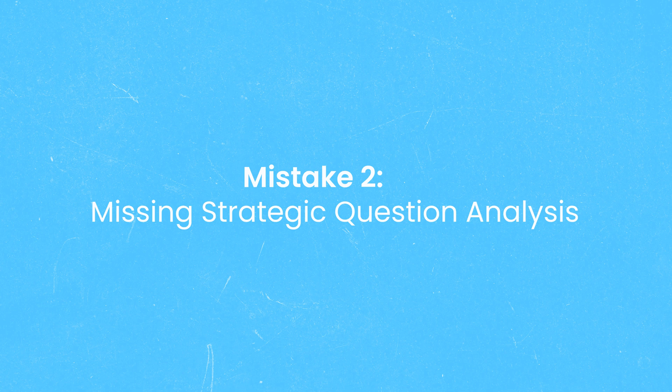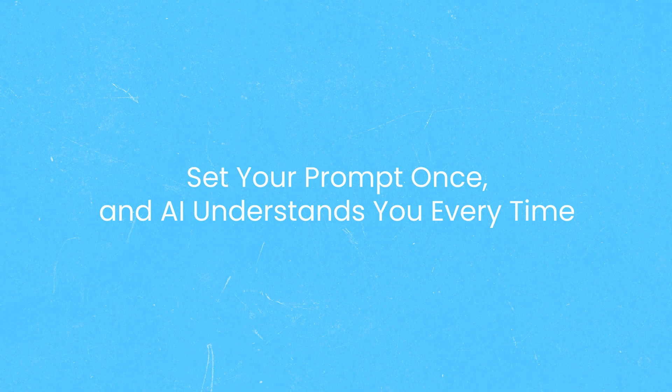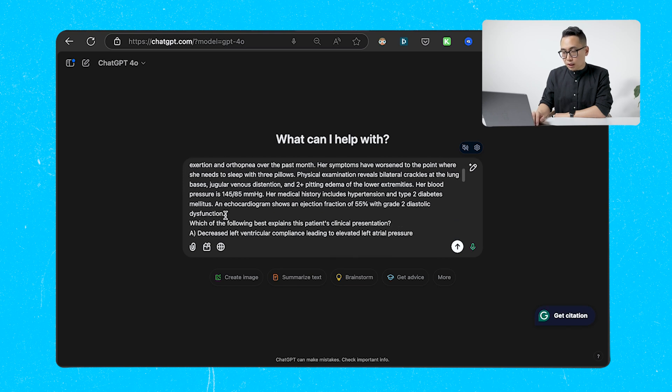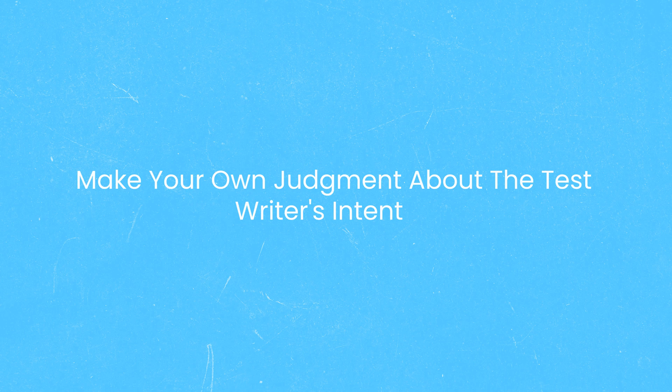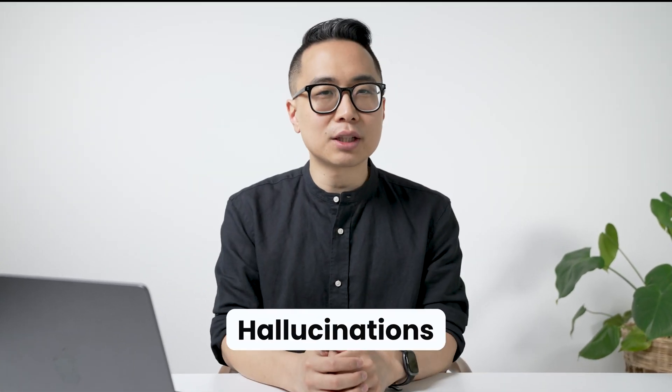Mistake number two is missing strategic question analysis. The secret to elite scores is understanding how test writers are thinking. One of my favorite ways to do this is to take a practice question, feed it into AI, and ask for a sentence-by-sentence analysis. You can even make custom prompts so you just paste the question in and it knows exactly what to do. Try to make your own judgment of the test writer's intent first, then check it against what AI tells you. ChatGPT won't be perfect — there'll still be hallucinations — but it often makes connections you didn't even think of.